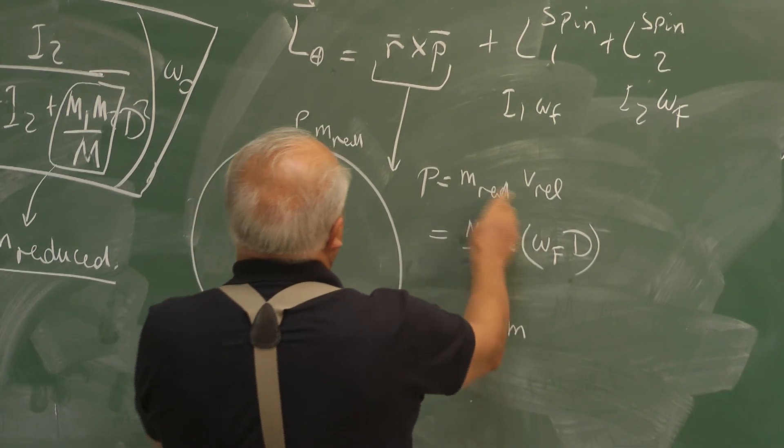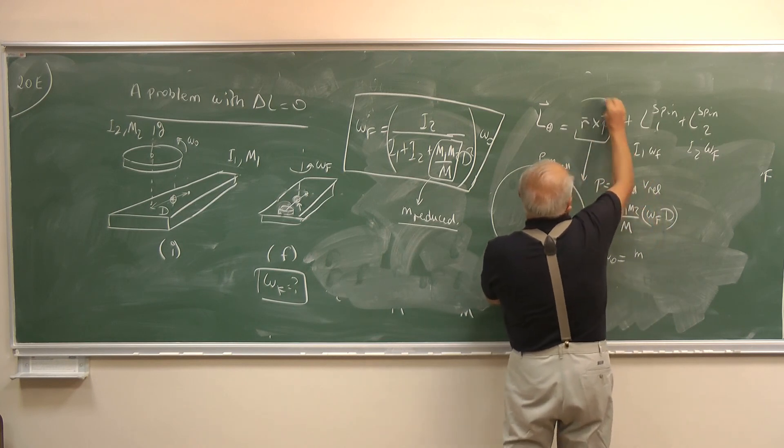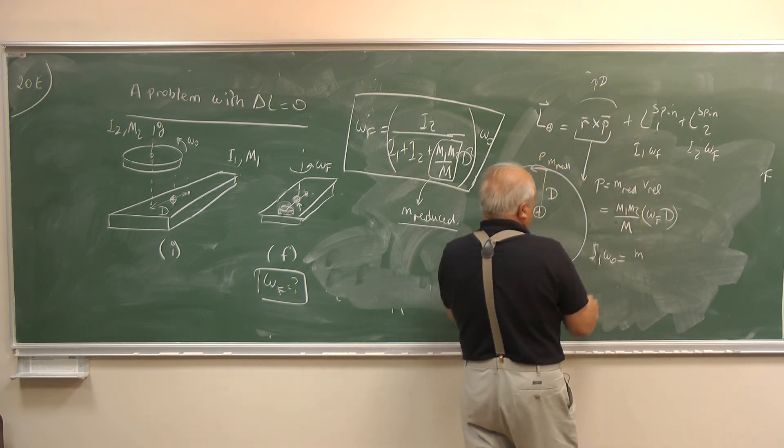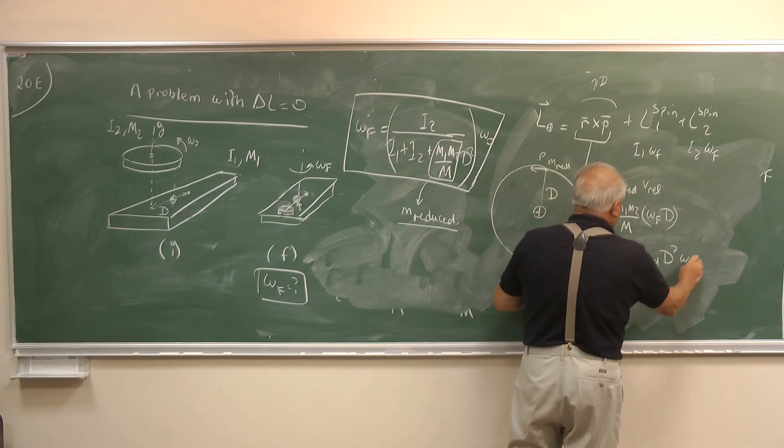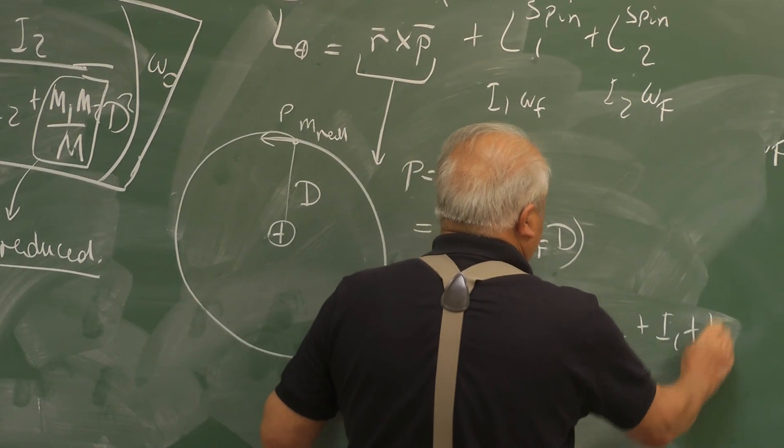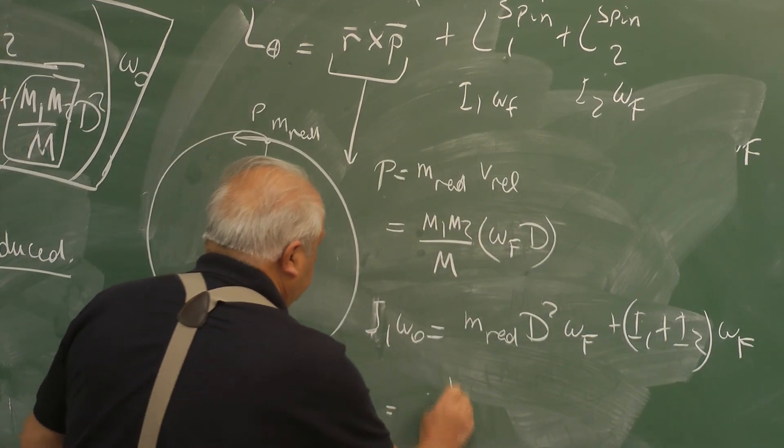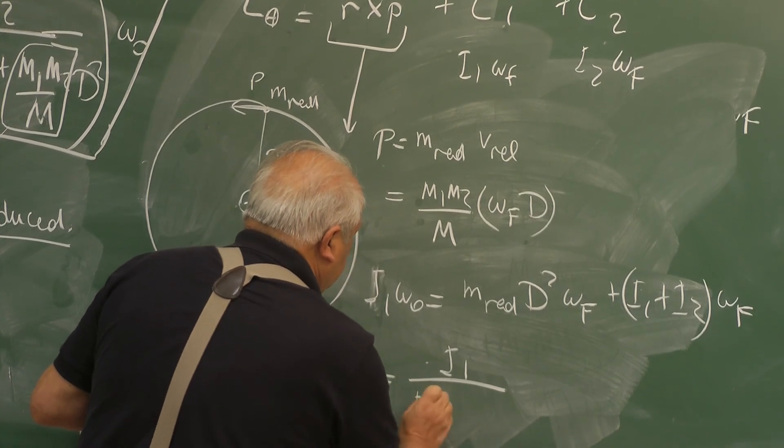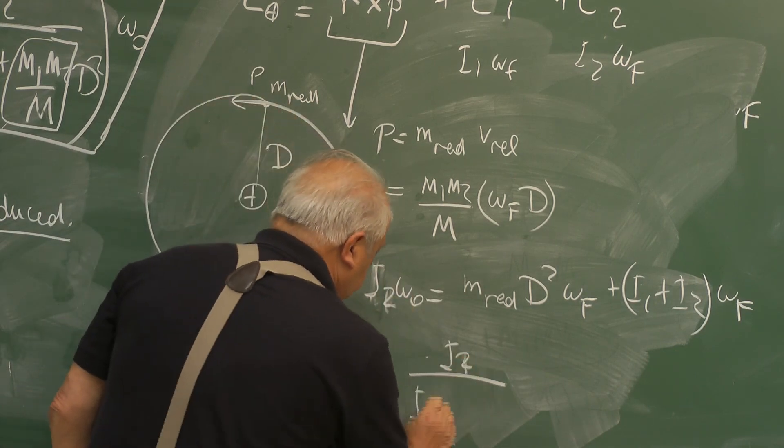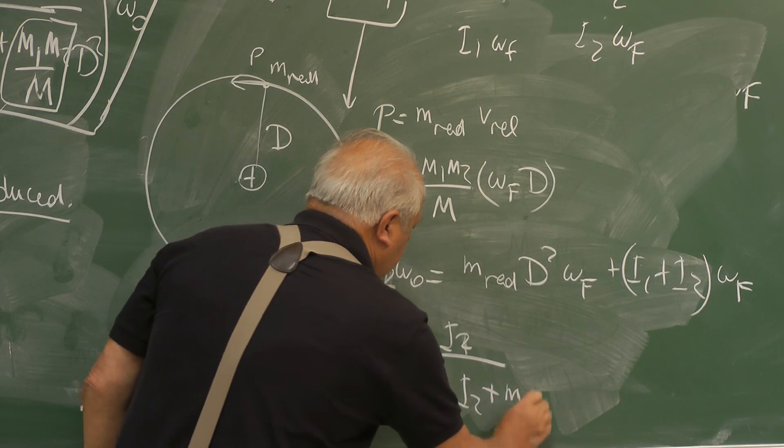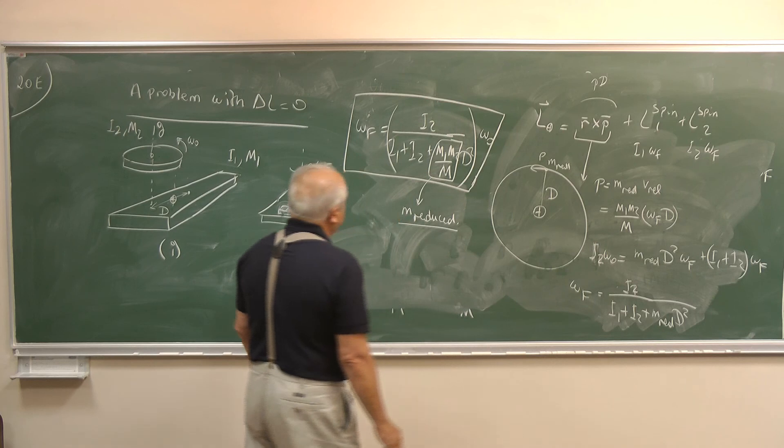For example if the plank rotates once, this is also rotating once so is the reduced mass is rotating once. So let's write the other. This is I1 omega F and this is I2 omega F. So initial angular momentum was I2 omega 0 that's equal to, let's follow, this is M reduced. I just wrote P to get the angular momentum, it is P times D. So this is P times D and P is that, so it is M reduced D square omega F plus I1 plus I2 omega F. So omega F is equal to I2 over I2 I1 plus I2 plus M reduced D square.